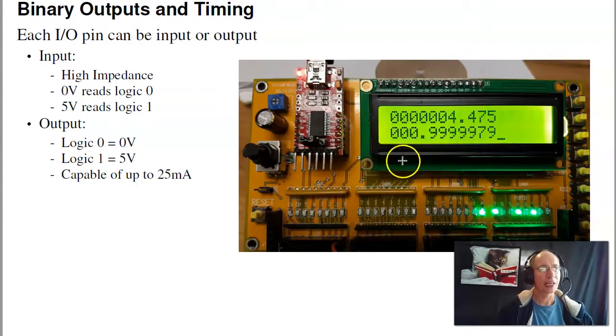When they're output in contrast, the PIC chip is driving the I/O pins, so the PIC is turning the LEDs on and off. When it's an output, logic 1 is 5 volts, and logic 0 is 0 volts. And each of these pins is capable of up to about 25 milliamps sourcing or sinking. So they can do a little bit of power. They can turn on LEDs, but they can't do much more.